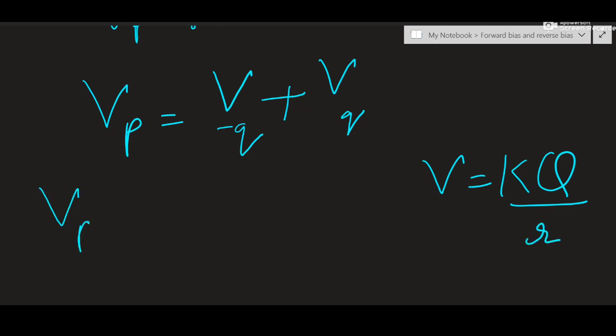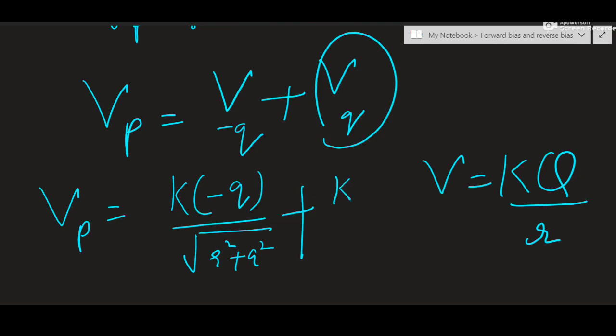Potential at P will be equal to K charge with sign. Distance of minus Q was... sorry, distance of both was this, root of R square plus A square. And plus, potential due to plus Q will be written as K charge with sign divided by distance.